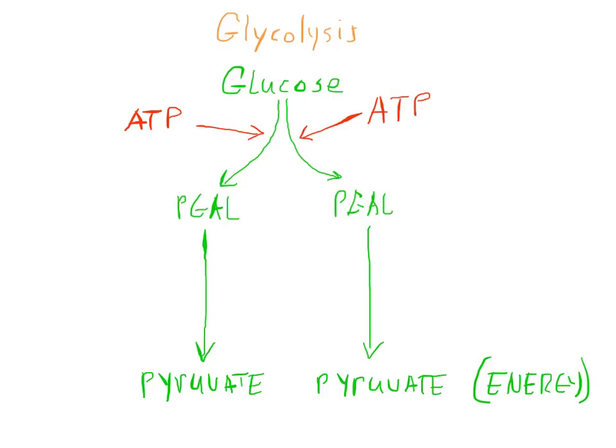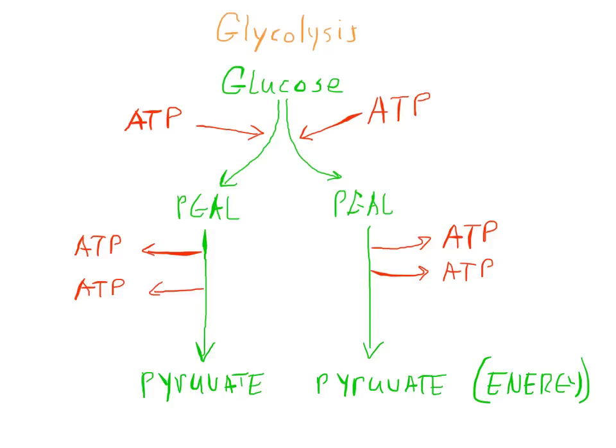As the p-gal is turned into pyruvate, it releases a molecule of ATP here, another one here, and the same thing happens over on this side. So in all, four molecules of ATP are released. ATP is a very important energy-carrying molecule, and we are going to symbolize that with a money sign.